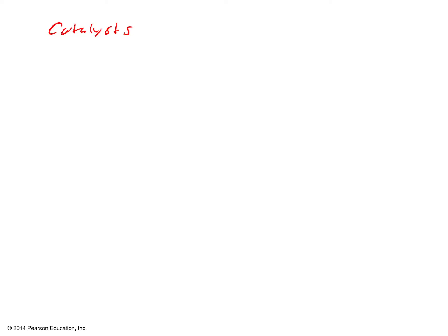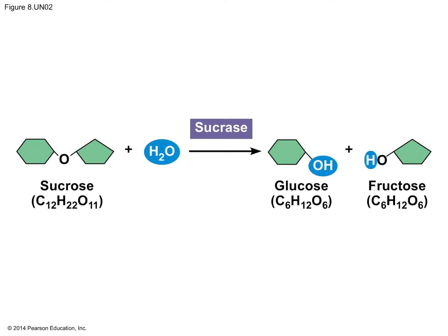Enzymes are called catalytic proteins. A great example of how enzymes work is the hydrolysis of sucrose. Remember from an earlier chapter, hydrolysis reactions use a water molecule to break a bond between two monomers. Here you see a sucrose molecule — sucrose is table sugar made up of two smaller monosaccharides, glucose and fructose. In the presence of an enzyme, in this case sucrase, we can break that glycosidic linkage and separate those two monomers from each other.